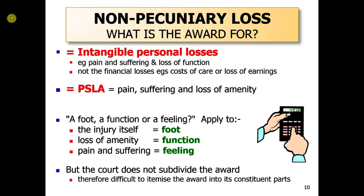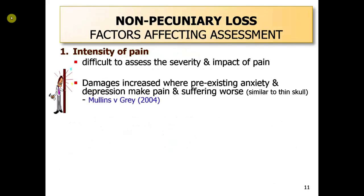Unfortunately, the court does not divide it up into those three elements — they just give you a global sum. They don't subdivide it, and therefore it's difficult at times to work out which of those elements are the most important and how much each is going to affect what you get.